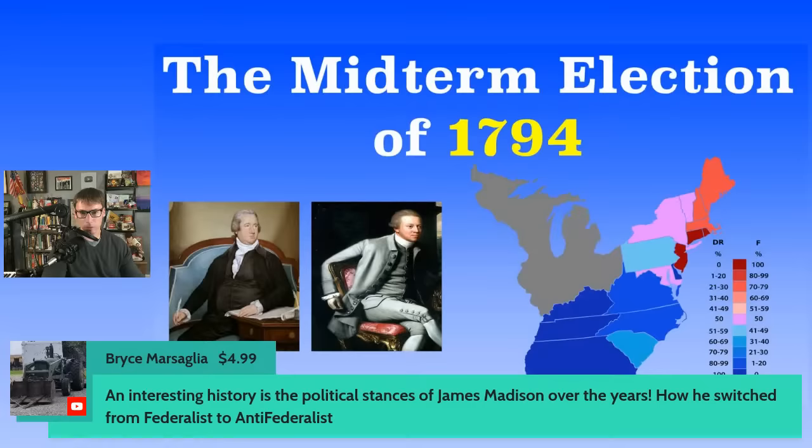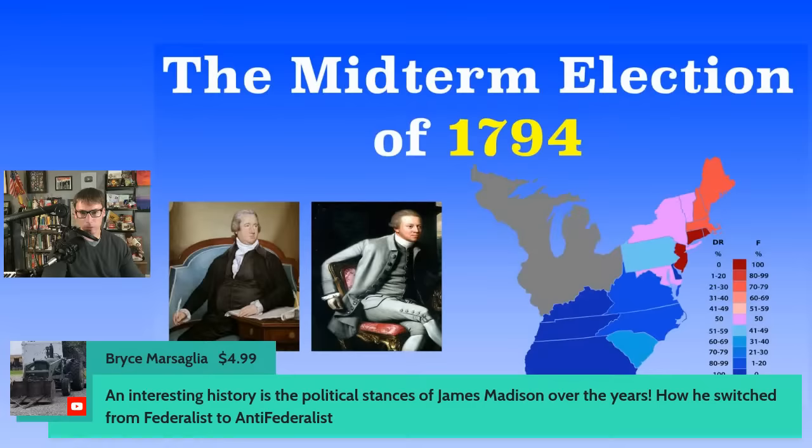A viewer mentions the interesting history of James Madison's political stances over the years. Yes, he changed his mind a lot — he went back and forth from Federalist to Anti-Federalist, and later, as he got older, went back to the Federalist side.